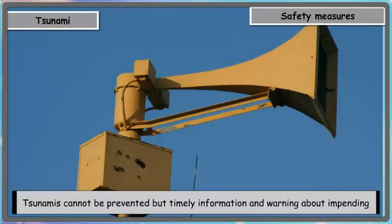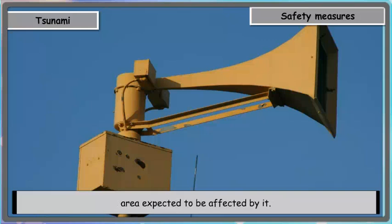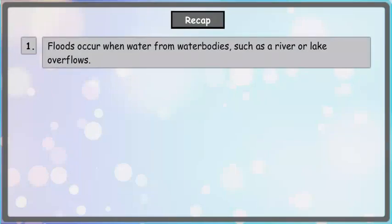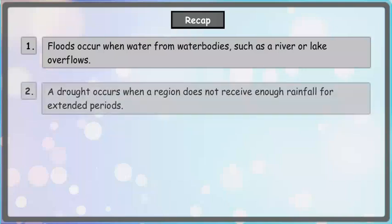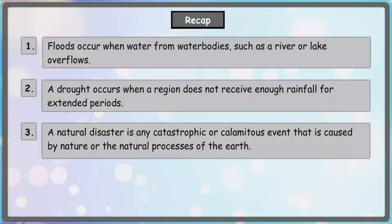Tsunamis cannot be prevented, but timely information and warning about impending danger can give people a narrow margin of time for a successful evacuation from the affected area. Recap: Floods occur when water from water bodies such as a river or lake overflows. A drought occurs when a region does not receive enough rainfall for an extended period. A natural disaster is any catastrophic or calamitous event caused by nature or the natural processes of the earth.